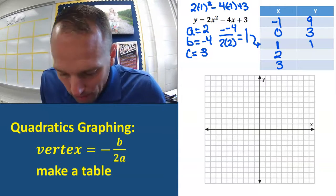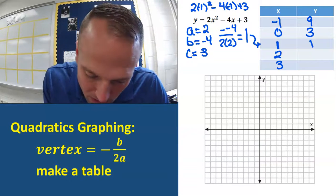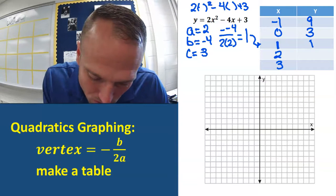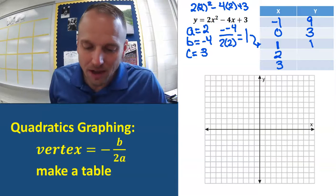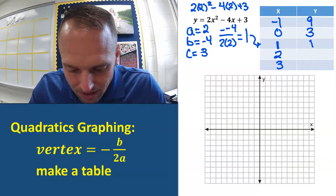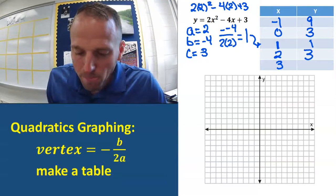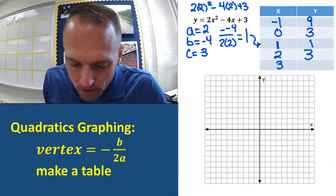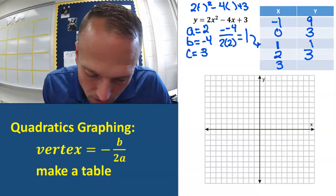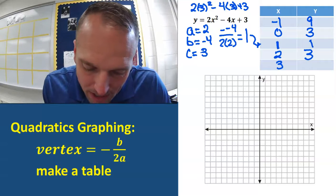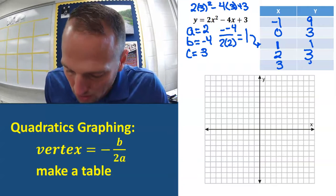Now let's do the bottom. Put 2 in for those values of x. If I put 2 in, that's going to be 4 times 4 is... 8 minus 8 is 0, plus 3 is going to be 3. And now let's put in 3. If I put 3 in for those x's, that's going to be 18 minus 12 is 6, plus 3 is going to be 9.